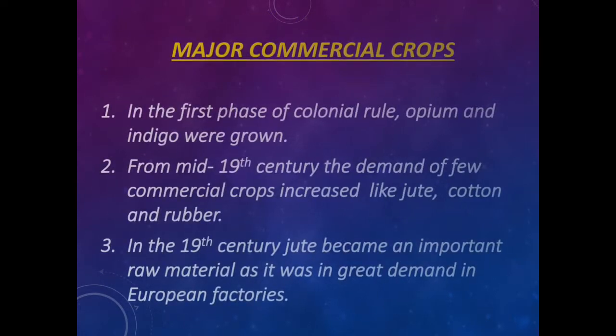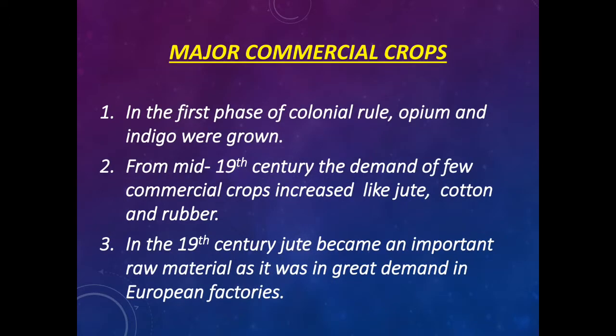Major Commercial Crops: In the first phase of colonial rule, opium and indigo were grown. From the mid-19th century, the demand for a few commercial crops increased, like jute, cotton, and rubber. In the 19th century, jute became an important raw material as it was in great demand in European factories.